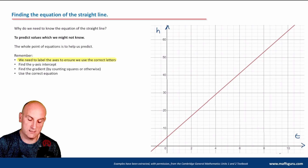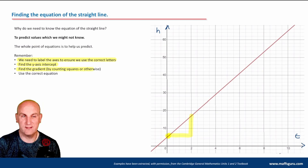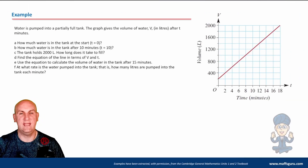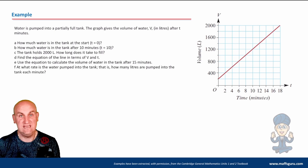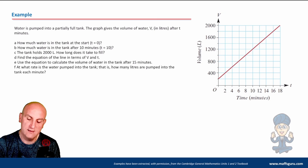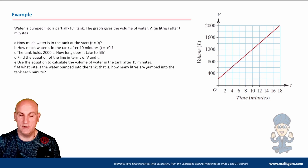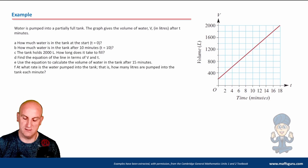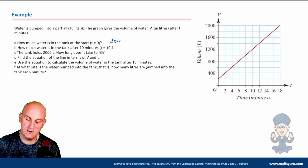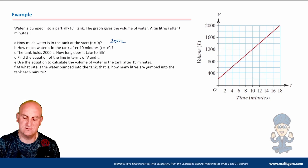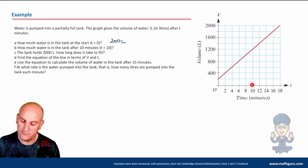Here is an example: water is pumped into a partially full tank. The graph gives the volume of water v in liters after t minutes. My formula must have v and t, not x and y. How much water is in the tank at the start? The graph goes from zero to 400 over two small squares, so that's 200 per square — the intercept is 200 liters. How much water is in the tank after 10 minutes? Find 10 minutes on the graph, go up, read across: 1200 liters.